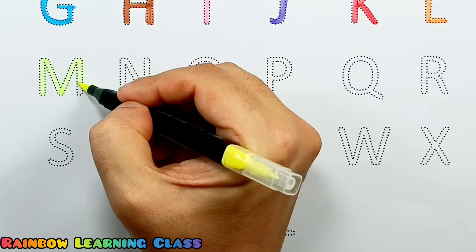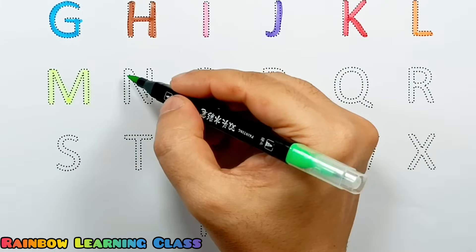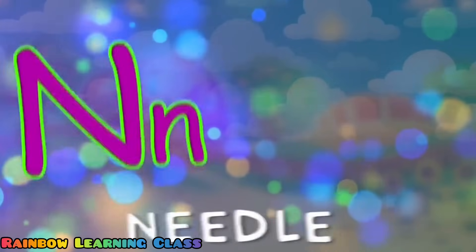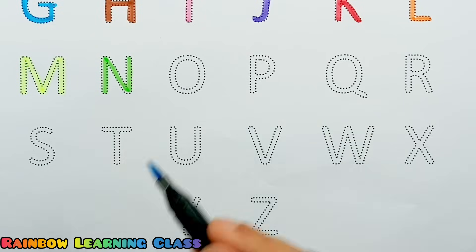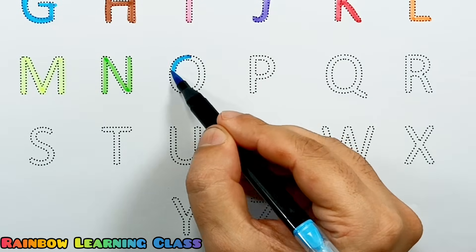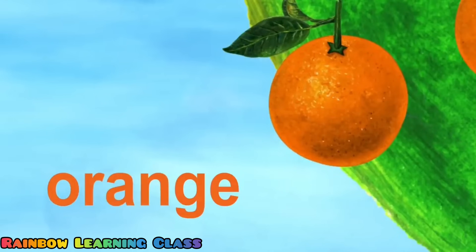A, B, C, D, E, F, G, H, I, J, K. N is for needle. L, M, N, O, P, Q, R, S, T, U, V. For orange. Orange!